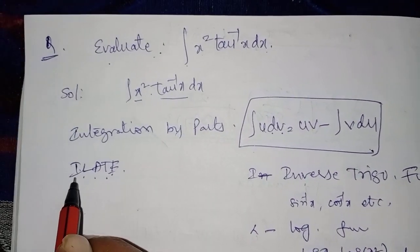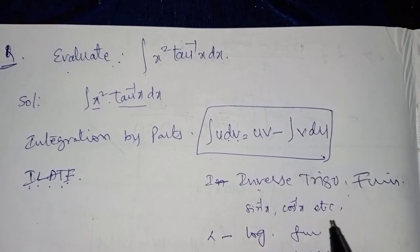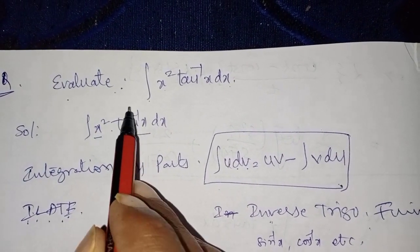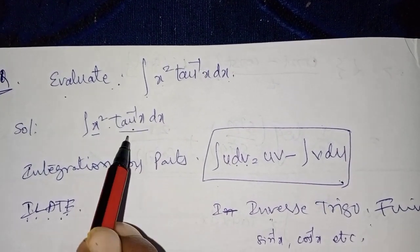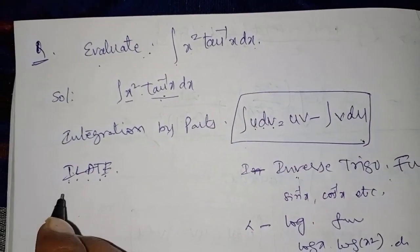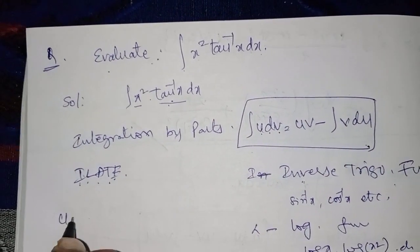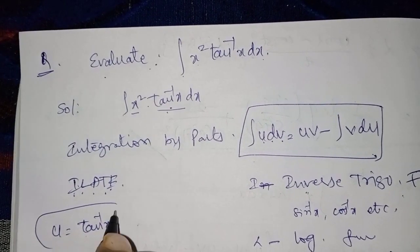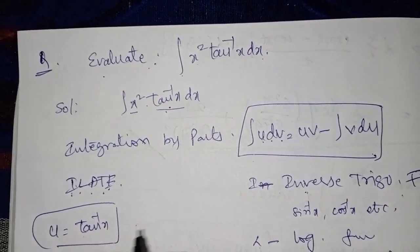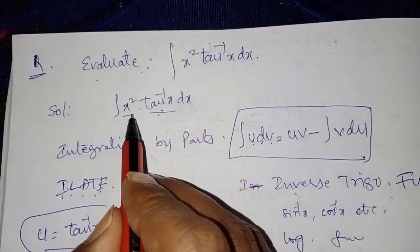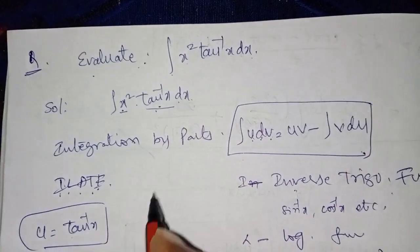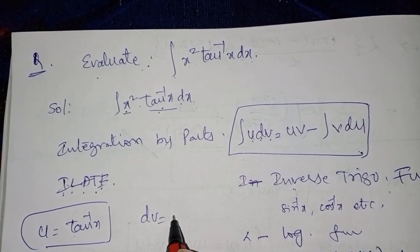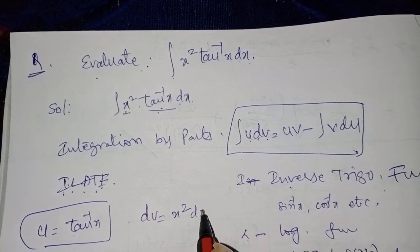First of all, I means inverse trigonometric function. If we observe here, we have an inverse trigonometric function, so that is u. Therefore u is equal to tan⁻¹x. The remaining one is dv, which is x² dx, so dv is equal to x² dx.